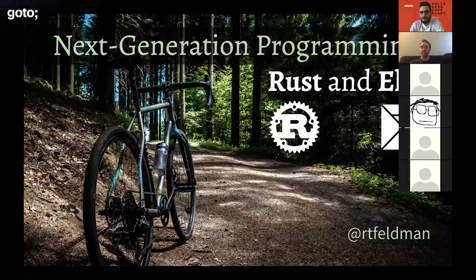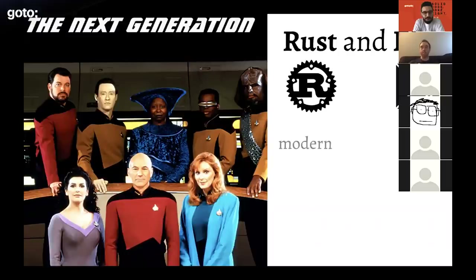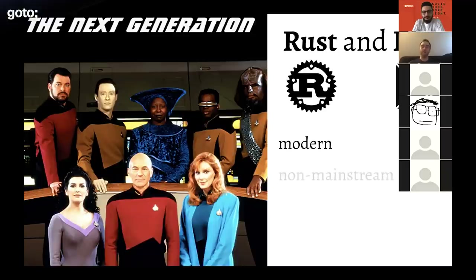This talk is about next generation programming: Rust and Elm. I'm Richard Feldman. Why aren't these the current generation, and why do I think they're going to be representative of the next generation? These are modern languages in wide use today, but not nearly as much as the more popular languages like JavaScript, Python, and Java — they're modern but not really mainstream.